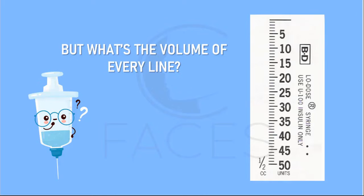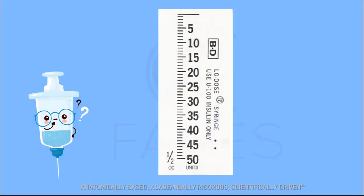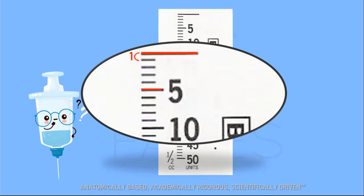To determine the volume at each line, or hash mark, we'll follow the same three steps I presented. To make it easier, let's magnify those lines to count. On this syringe, there are five lines between each numbered increment.